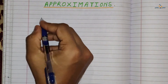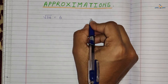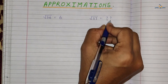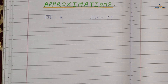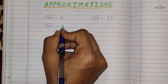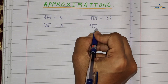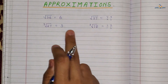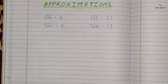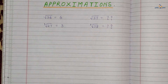Suppose I tell you to find the square root of 36 — you will say it is 6. But if I ask for the square root of 27, you'd say it is greater than 6 but less than 7, maybe 6.2, 6.3, or 6.5 — that is your approximation. Similarly, the cube root of 27 is 3, but the cube root of 28 would be greater than 3, maybe 3.2 or 3.3. We are going to find such values using approximations.